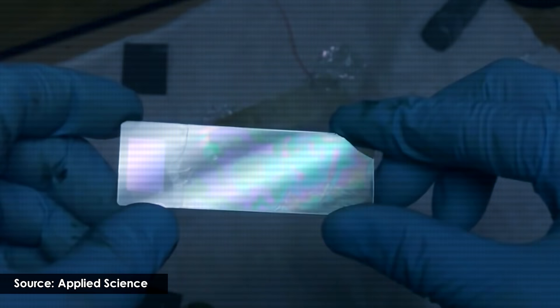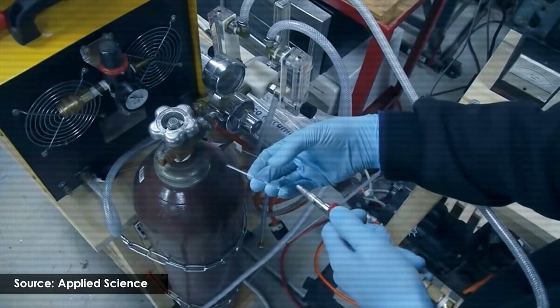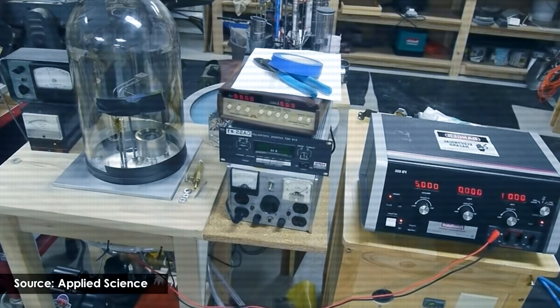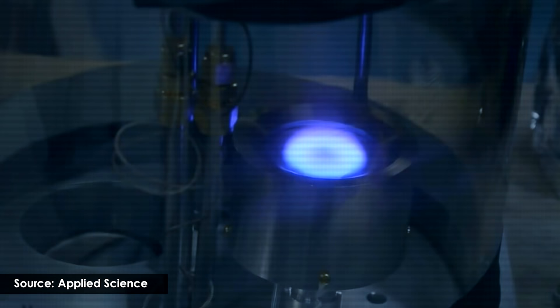First of all, to make such a pixel, I need to get electrically conductive glass from somewhere. In his video, Ben made such a glass himself by plasma coating the glass with tin oxide and indium oxide layers in a vacuum chamber. Since I don't have such special equipment, I decided to order such a glass from a Chinese manufacturer.